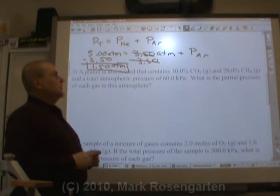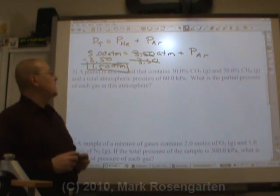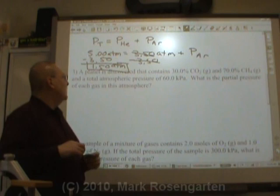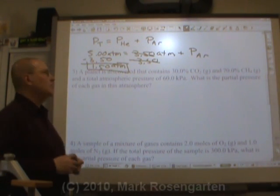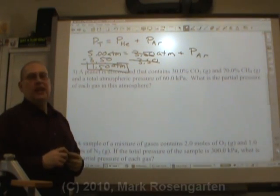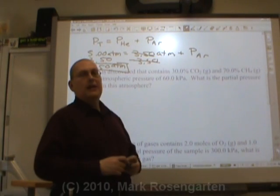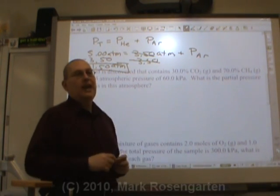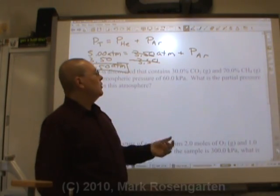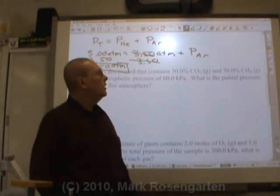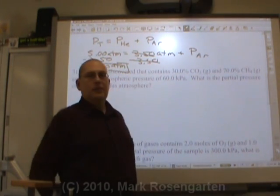The planet is discovered that contains 30% carbon dioxide gas and 70% methane gas for a total atmospheric pressure of 60.0 kilopascals. What is the partial pressure of each gas in the atmosphere? Well, if each gas contributes the same amount to the pressure, if the amounts of gas are the same, 30% of carbon dioxide should exert 30% of the total pressure. If it's 70% methane, the methane will exert 70% of the total pressure.